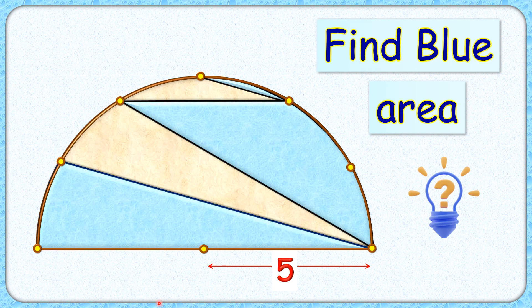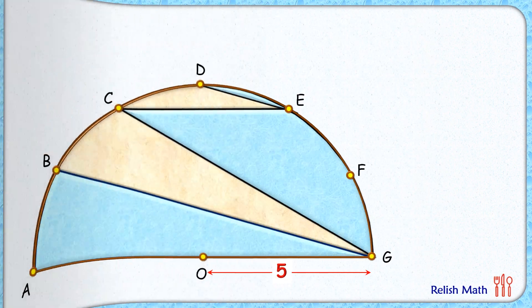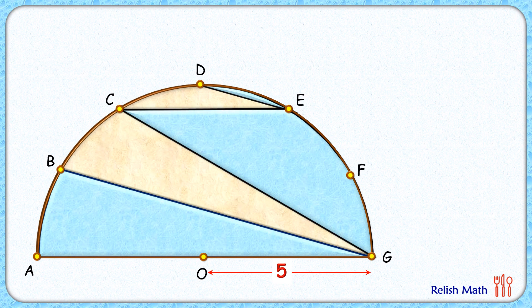Welcome everyone. In this very interesting question, we are given a semicircle with radius 5 centimeters. Its arc is divided into six equal parts. The exciting part is that with this limited data, we have to find the total area of this blue shaded region. Let's check this simple and elegant solution. We'll calculate this area separately, so let's give them a different color here.